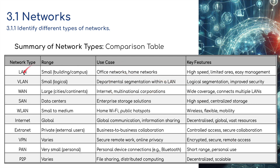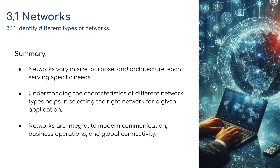To summarize the differences: LANs and VLANs have a small range; WANs have a large range; SANs are based in data centers; WLANs can be small or medium range; the internet is global; extranets are private with external user access; VPNs vary in range; PANs are a very small personal range; and peer-to-peer networks also vary. Networks vary in size, purpose, and architecture, each serving specific needs. Understanding the characteristics of different network types helps in selecting the right network for the right application. Networks are integral to modern communication, business operations, and global connectivity.